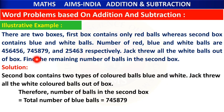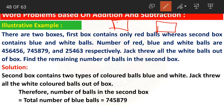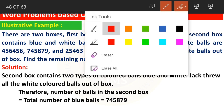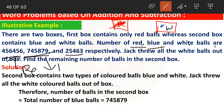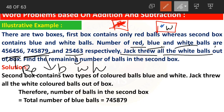Now another example: there are two boxes. The first box contains red balls, the second box contains blue and white balls. The number of red, blue, and white balls are 4 lakhs 56,456; 7 lakhs 45,879; and 25,463 respectively. Jack threw all the white balls out of the second box. Find the remaining number of balls in the second box.